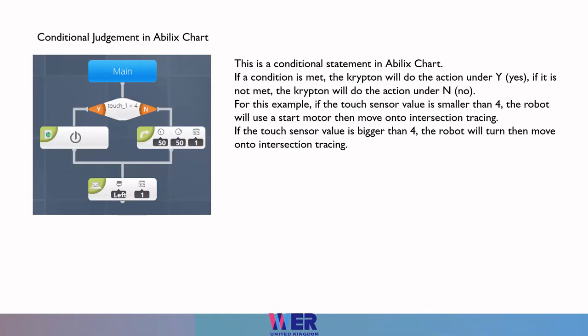This is a conditional statement in Abelik's chart. The statements start with a condition — the if. The Krypton will then do an action under Y, yes, if the condition is met. If it is not met, the Krypton will do the action under N, no.